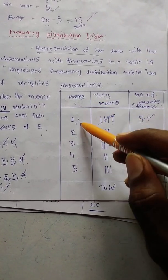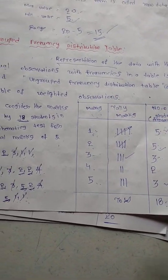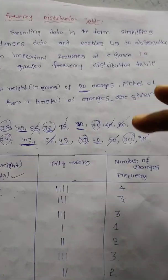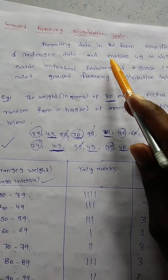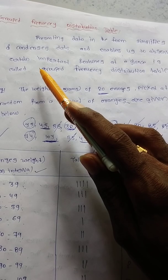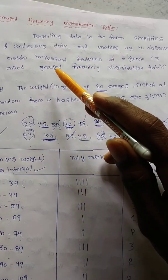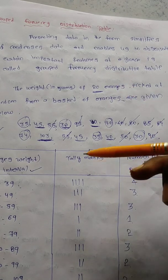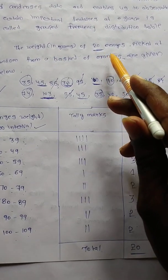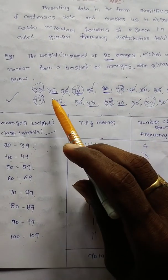In the ungrouped frequency distribution table, we mention the marks in one column and the tally marks in another. Using tally marks, we represent the ungrouped frequency distribution table. Now we move to the grouped frequency distribution table. Presenting data in a simpler, condensed form enables us to observe certain important features at a glance — all the data is available in a single table. In this question, the weight of 20 oranges picked at random from a basket are given.